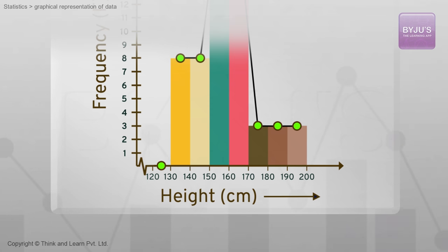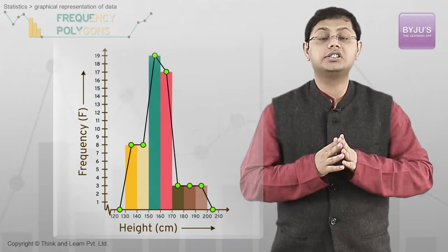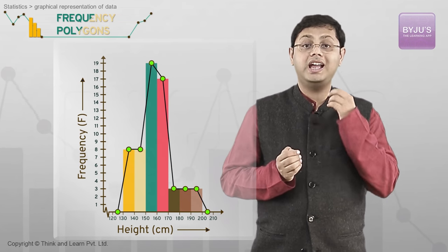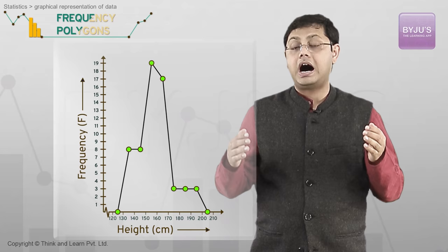And then we are done. We can now connect the line to the x-axis. Doing the same on the other end, we add 200 to 210 to the frequency polygon graph, marking the class mark as 205, and closing the figure at both ends gives us the frequency polygon.